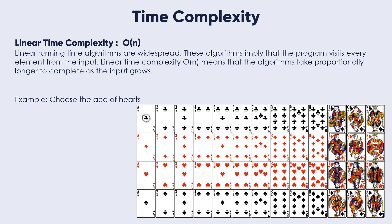Where is ace of hearts? If we are lucky, we can find it at the first card. But if we are unlucky, we can find it at the last card. This depends on the number of the cards.